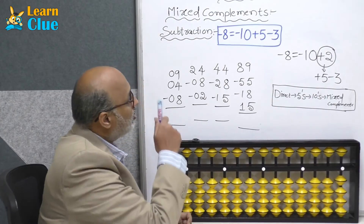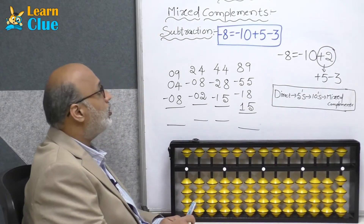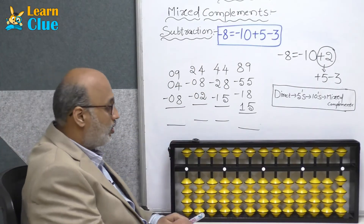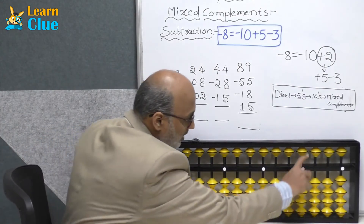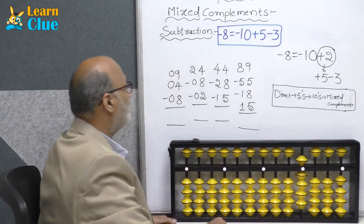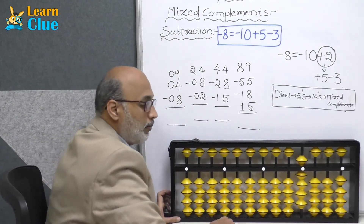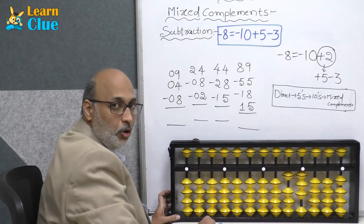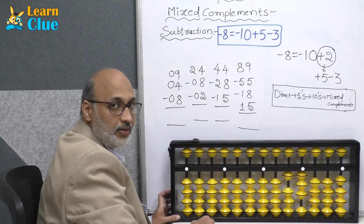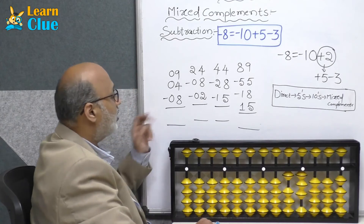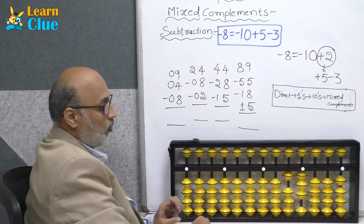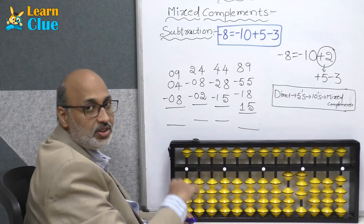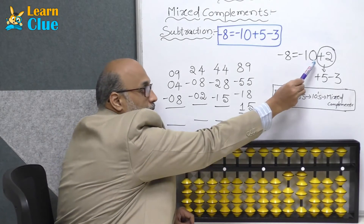Now we are going to learn about mixed complements subtraction minus 8 technique. Let's see a couple of problems. First problem: plus 9, plus 4. Plus 4 is nothing but minus 6 plus 10. Hope you are getting the techniques and friends right. Now minus 8 they are asking. What is the technique for minus 8 in tens complements? It is nothing but minus 10 plus 2.